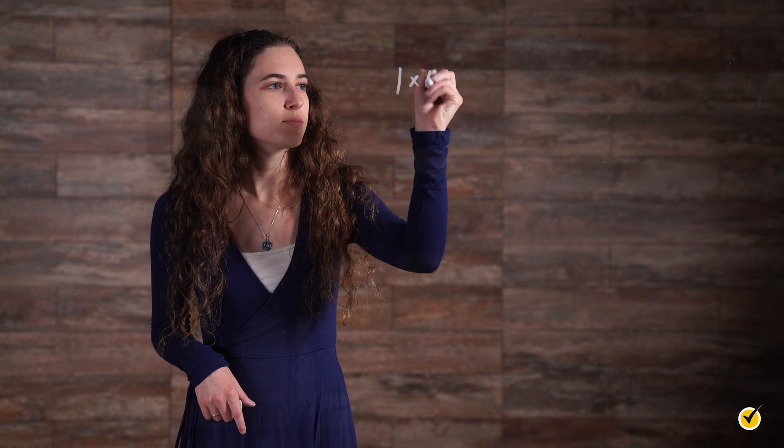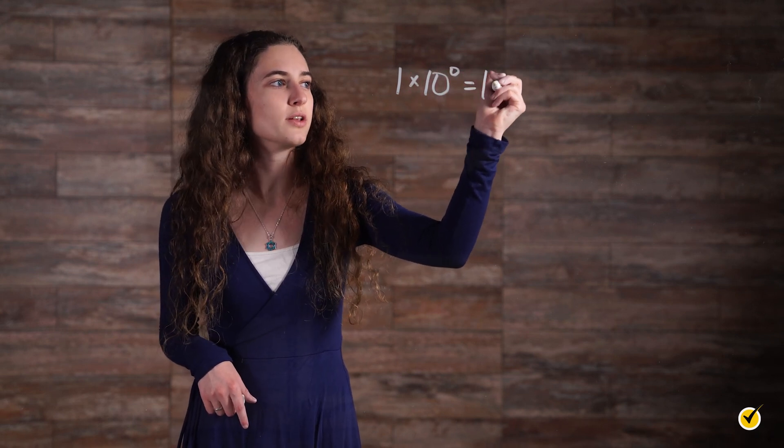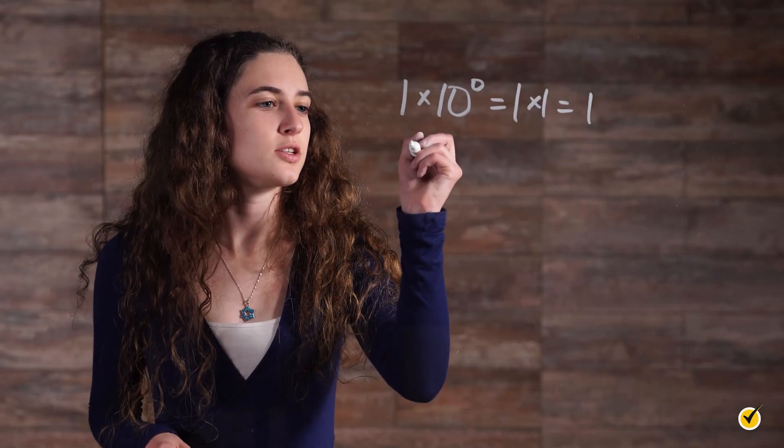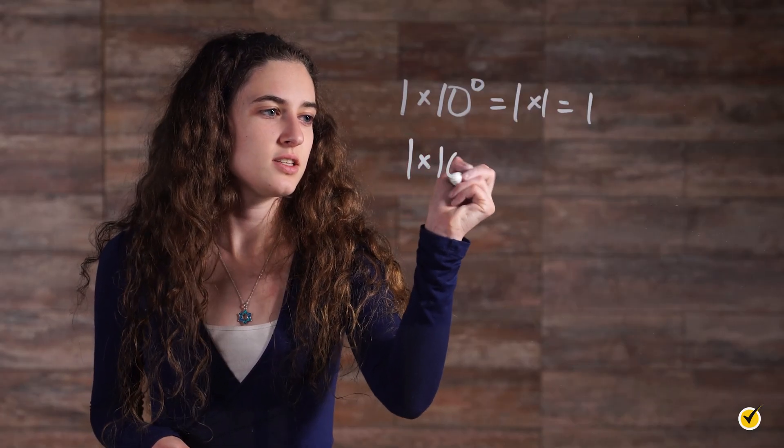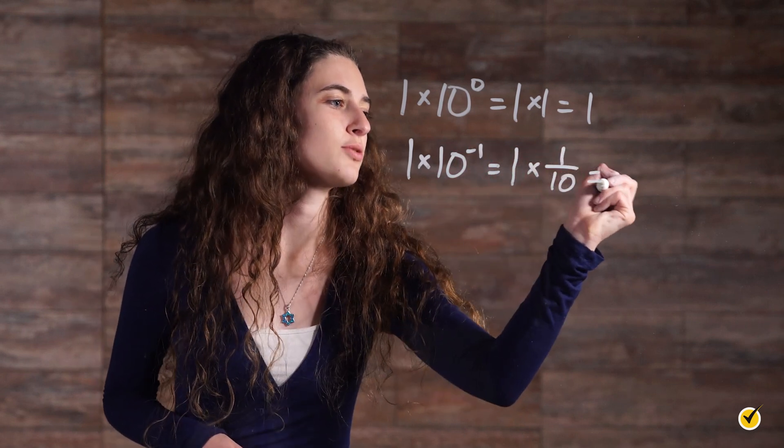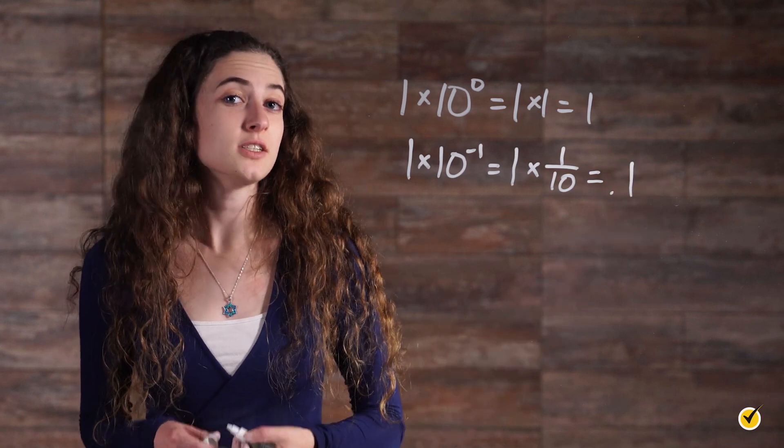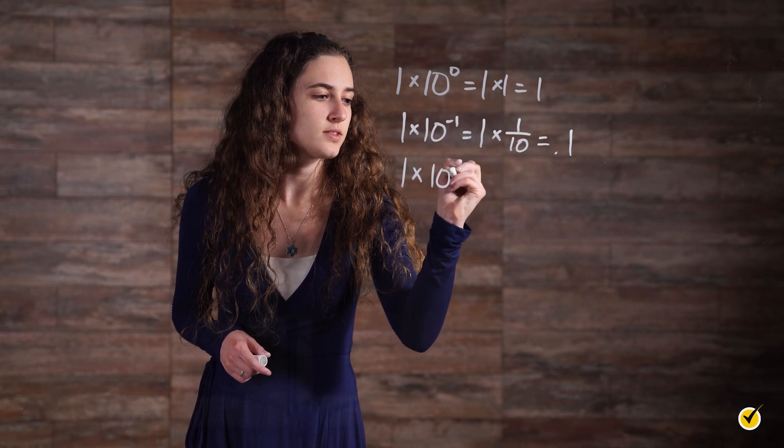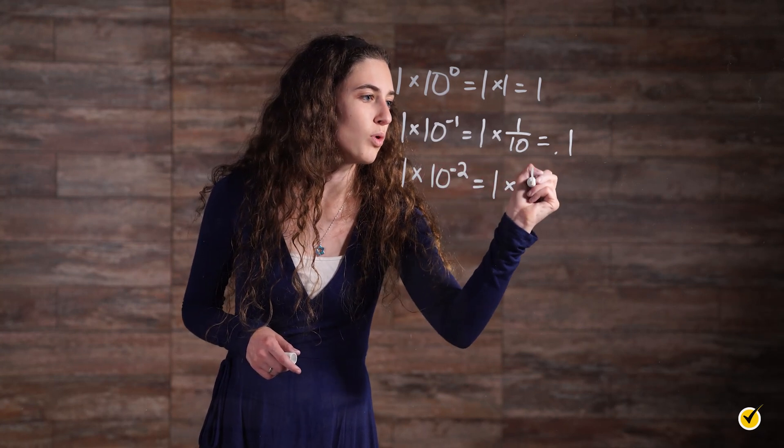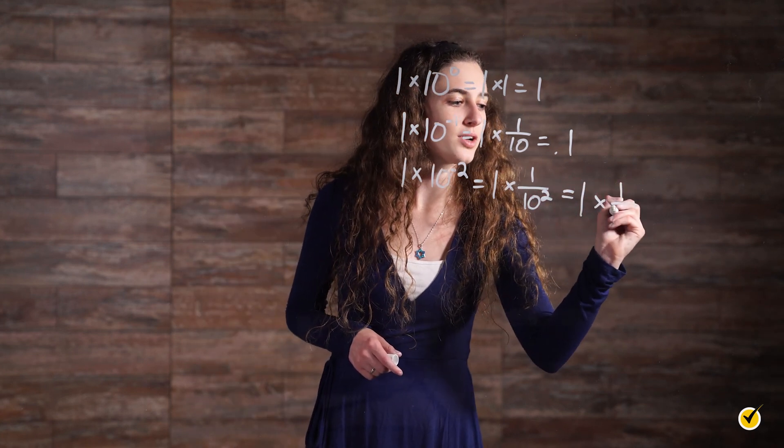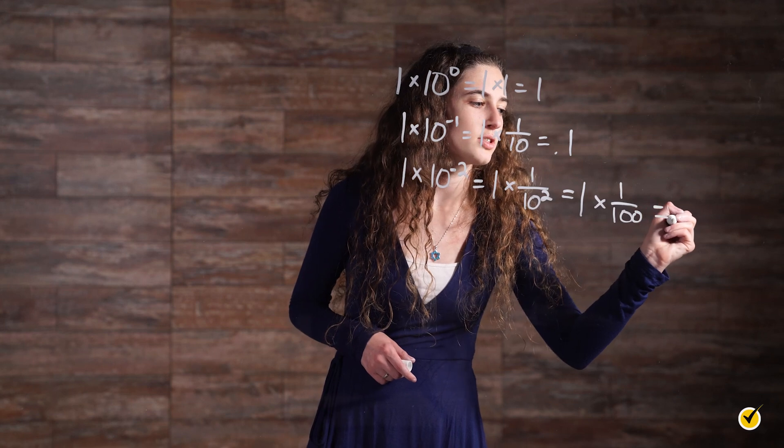Again, the number 1 can be written as 1 times 10 to the 0 power, which is equal to 1 times 1 equals 1. The number 0.1 can be written as 1 times 10 to the negative 1, which is equal to 1 times 1 over 10, which is equal to 0.1. The number 0.01 can be written as 1 times 10 to the negative 2nd, which is equal to 1 times 1 over 10 squared, which is equal to 1 times 1 over 100, which is equal to 0.01.